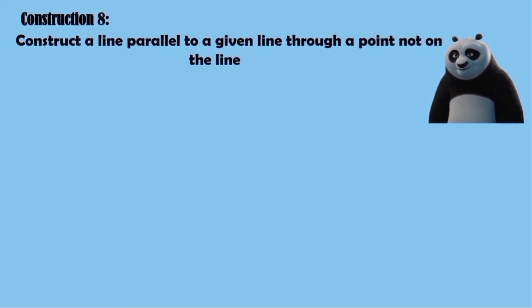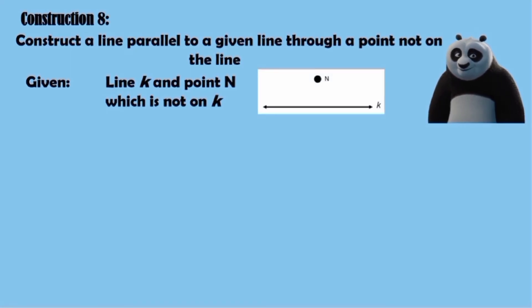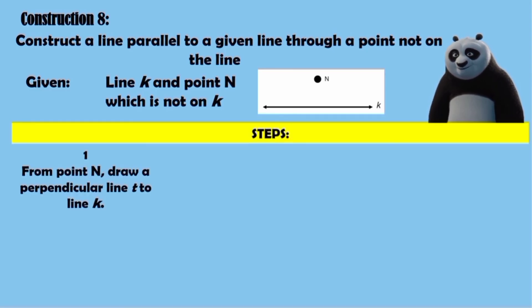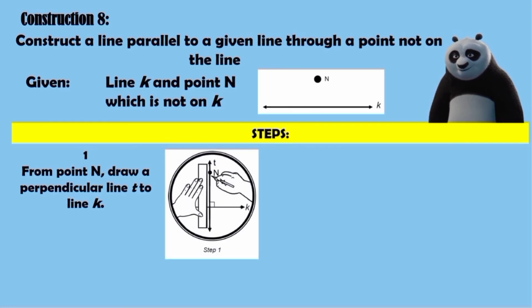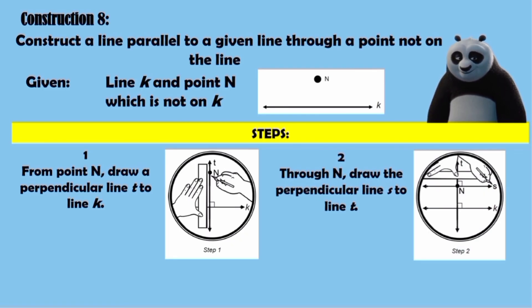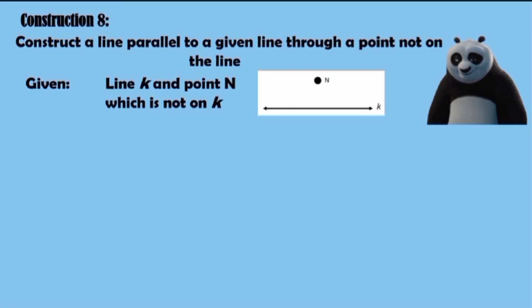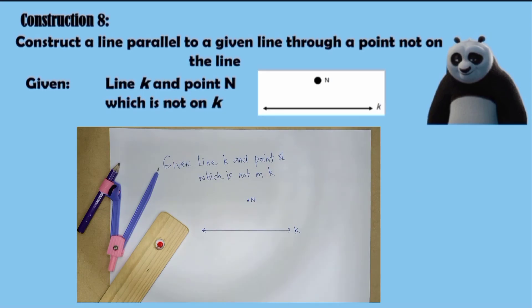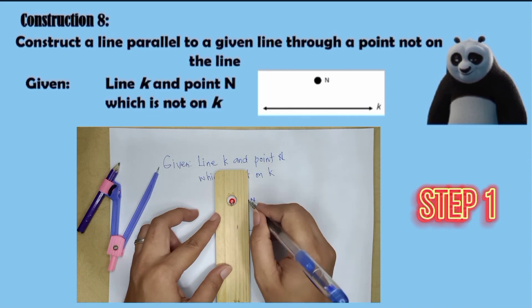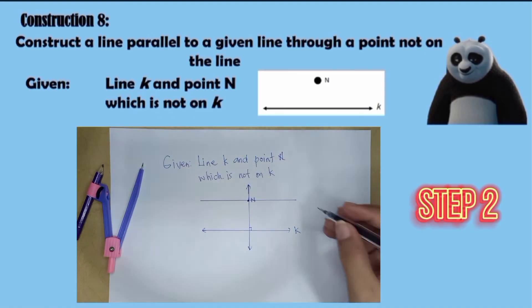Construction Number 8: Construct a line parallel to a given line through a point not on the line. Given line K and point N, which is not on K. Step 1: From point N, draw a perpendicular line T to line K. Step 2: Draw the perpendicular line S to line T. Take note: since the two corresponding angles are equal, the two lines are parallel.